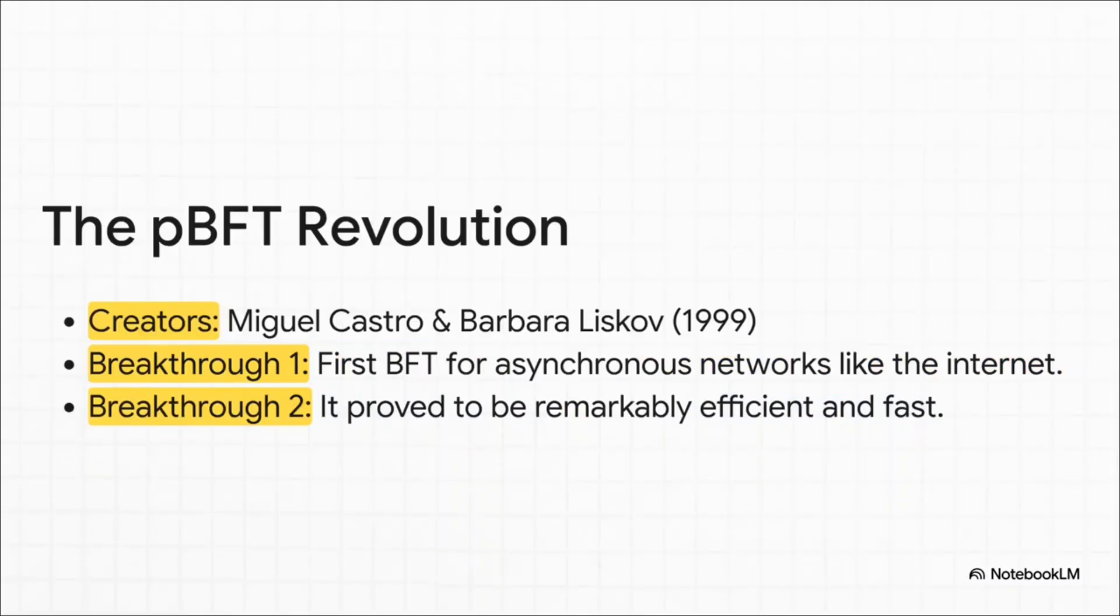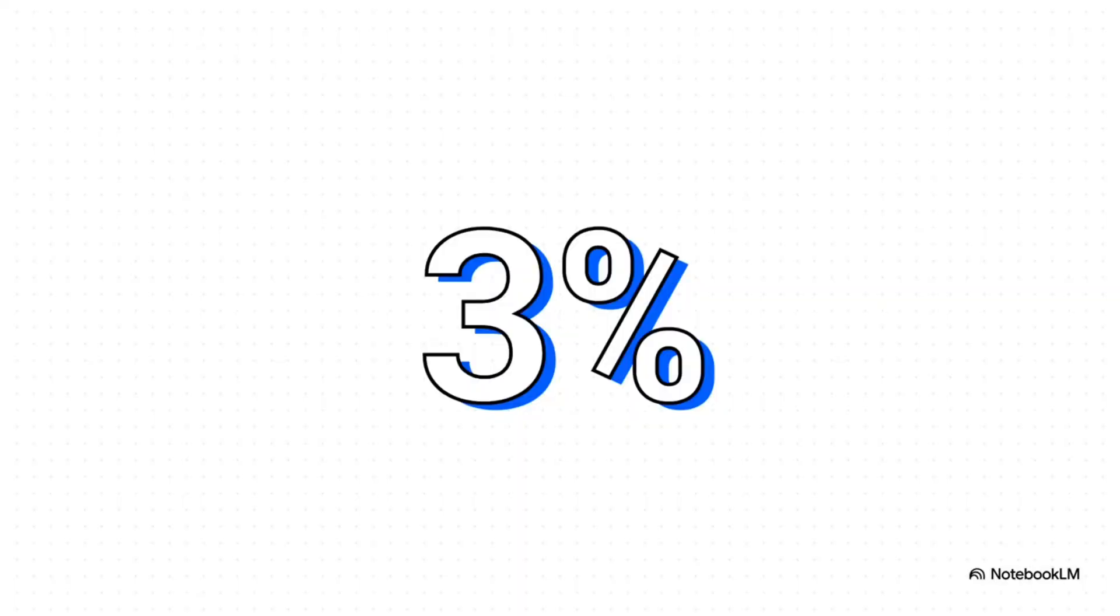What they came up with was called Practical Byzantine Fault Tolerance, or PBFT, and it was a total game changer. First, it was built specifically for networks like the internet, where messages can get delayed or even lost. But second, and this was the real shocker, it was fast. Castro and Liskov actually built their system and proved that it was only about 3% slower than a standard system with zero security. This was huge. It proved that you could have Fort Knox level security without completely crippling the system's performance. It made Byzantine Fault Tolerance not just possible, but actually practical.